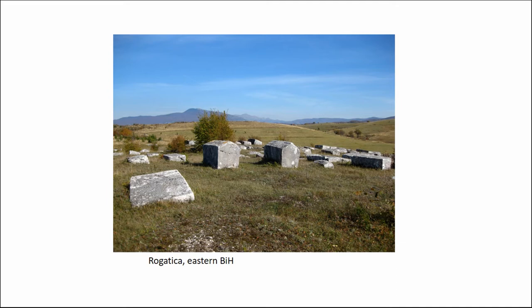They are enormous monoliths that have been understood in many different ways, particularly in association with the so-called dualist history of Bosnia — the Bogomil past — but that thesis has been rebuked. These are the residues of the medieval landscape of death that you can find all around Bosnia.